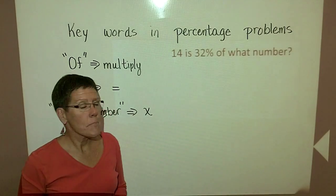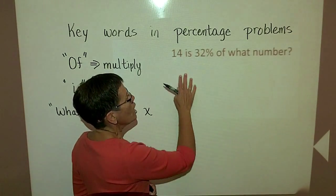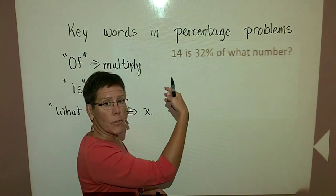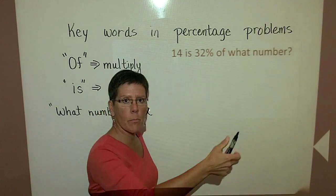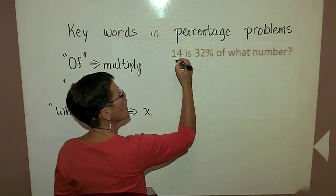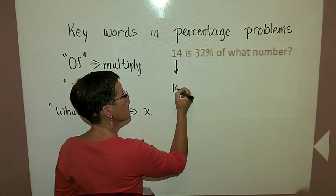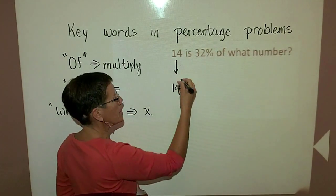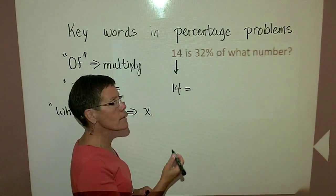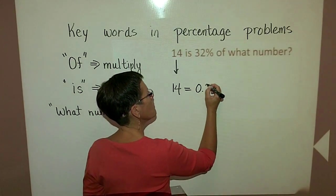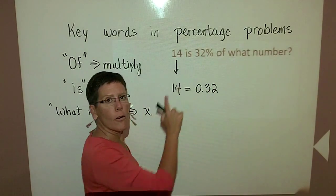All right, let's do the same thing. This time we are given a portion. We're not taking a percentage of some number. We know that the number 14 is 32%. So again, move that decimal place two places to the left. Of.